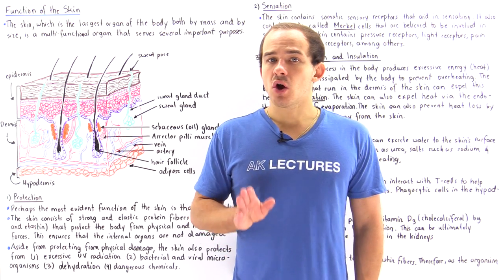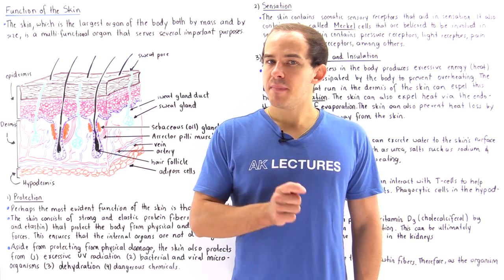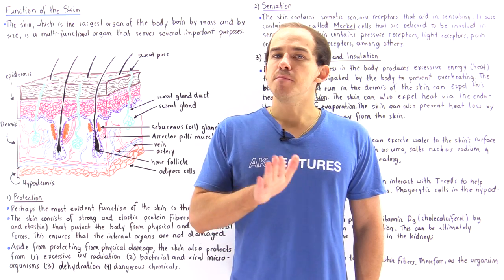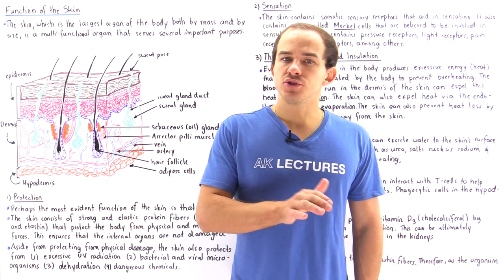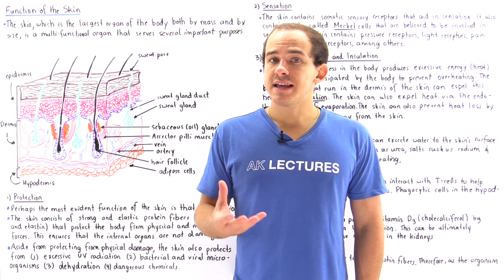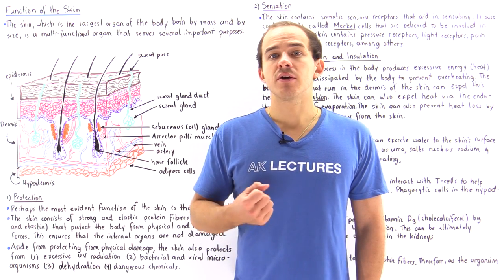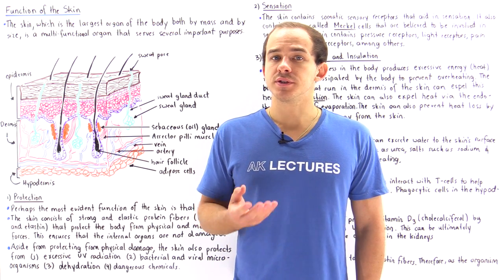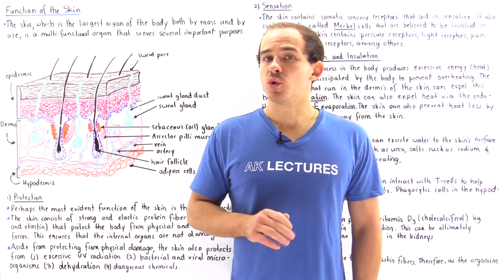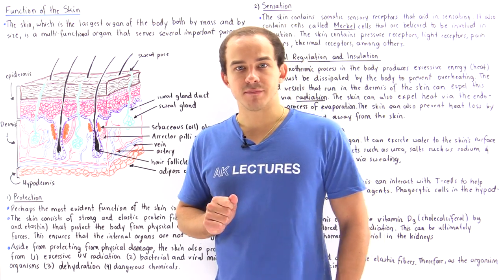Our skin is the largest organ of the body by mass as well as by size, and it's a multifunctional organ — a set of tissues that work together to carry out a certain set of functions. In this lecture we're going to discuss seven different functions of the skin.